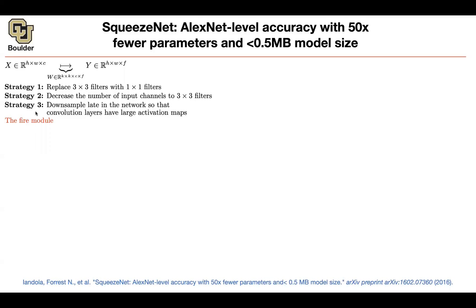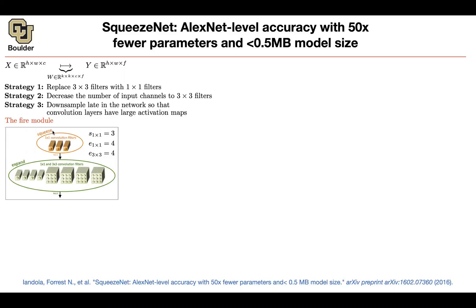We introduce notation: S1x1 is the number of one-by-one filters in the squeeze layer. For example, if you have three filters, S1x1 equals three. The vector size corresponds to C, the number of input channels. You first squeeze — reducing the dimension — apply ReLU, and then do the expansion. This is where strategy one comes into place: you replace some of your 3x3 convolutions with 1x1 convolutions.